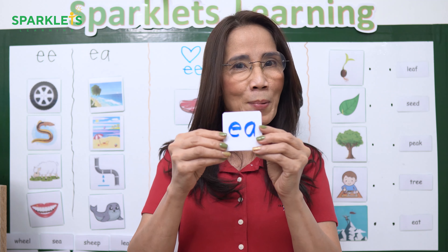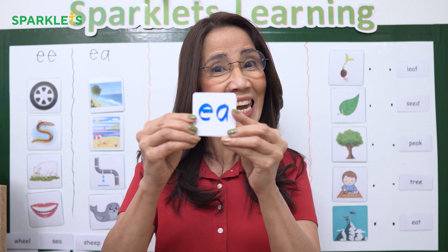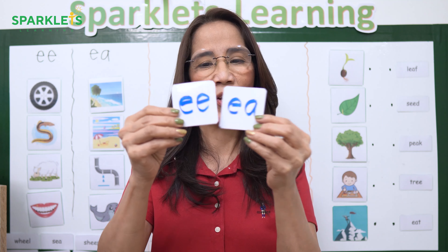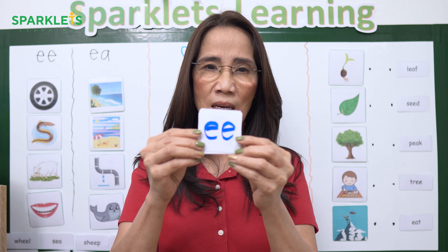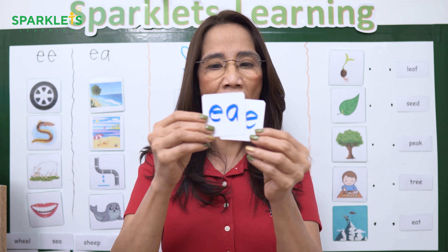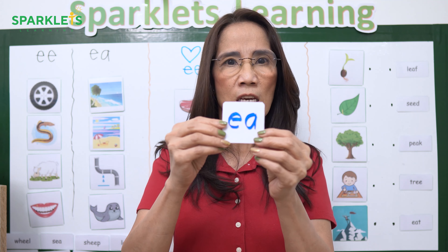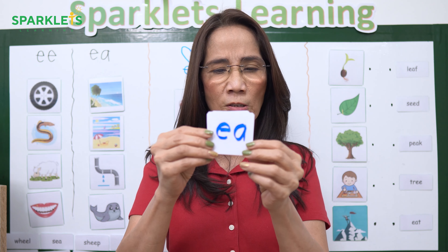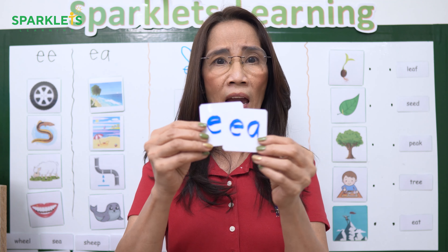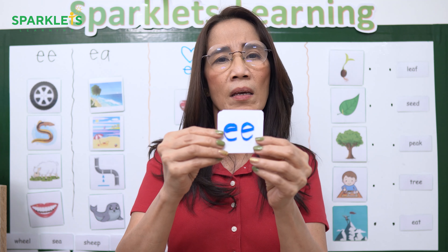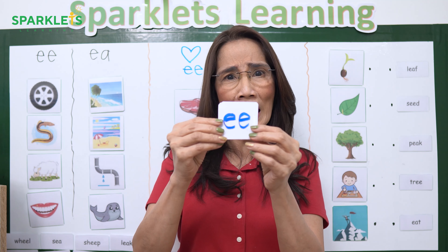For example: you are happy — EE. You're sad — EE. You're mad — EE. You're scared — EE. Practice sounding out the vowel teams with these different emotional expressions to engage the children.